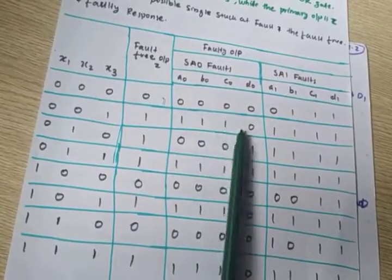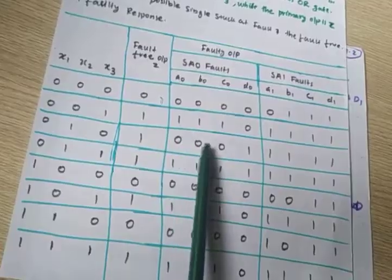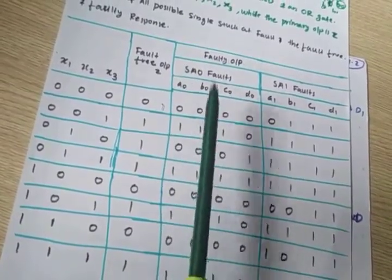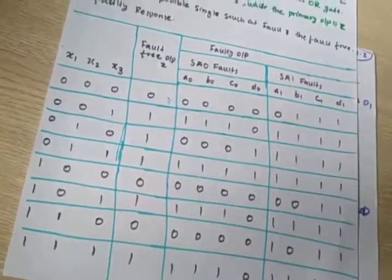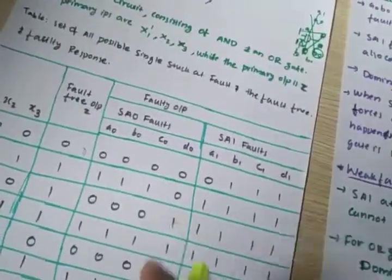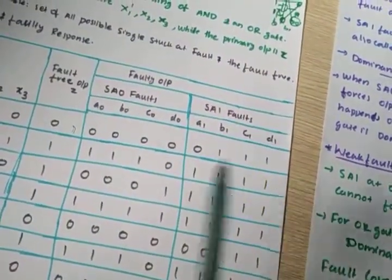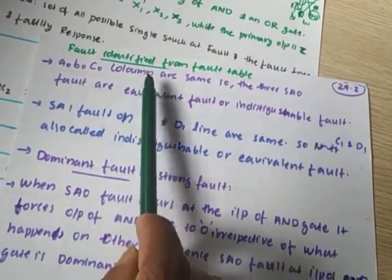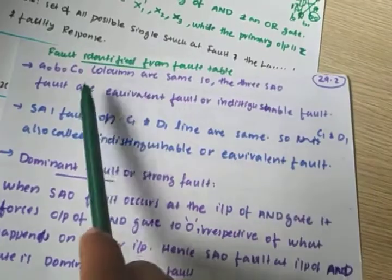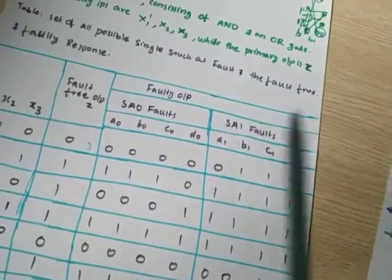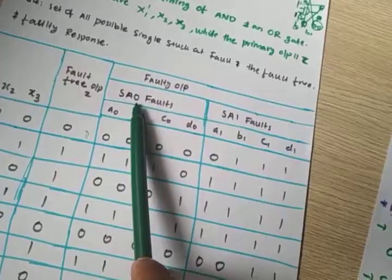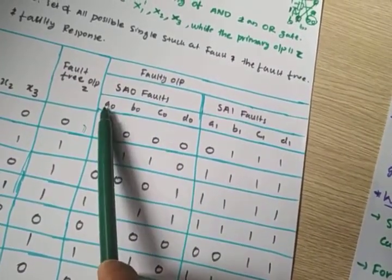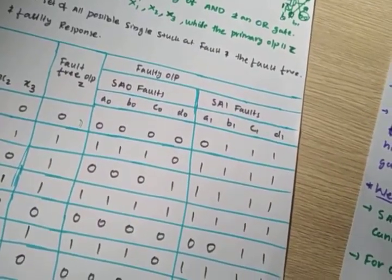Whatever test variable you give, you will always get a0, b0, c0 equal. So such fault columns where this happens — for stuck-at-0, a0, b0, c0 columns are the same. So the three stuck-at-0 faults a0, b0, c0 are called equivalent or indistinguishable faults.